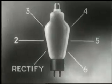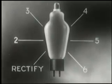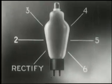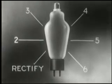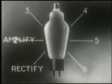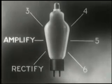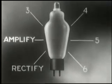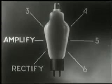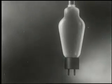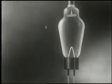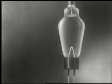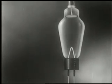So far in this film we've discussed only one of the basic things we can do with the electronic tube — we can use it to rectify. The second basic thing we can do with it is amplify. Here's how. Between the cathode and the anode of the two-element tube which we diagrammed a while ago, we now place a grid.